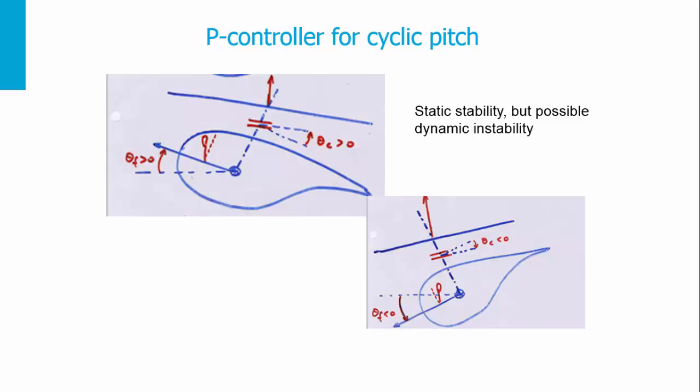We are oscillating around the static value. For example, if we build the pitch attitude up, we need to input cyclic pitch theta C and move the stick forward. As the stick moves forward, the pitch attitude theta F goes down. So we need to input theta C back — the stick has to go backwards. Therefore, we are going to add a D action.